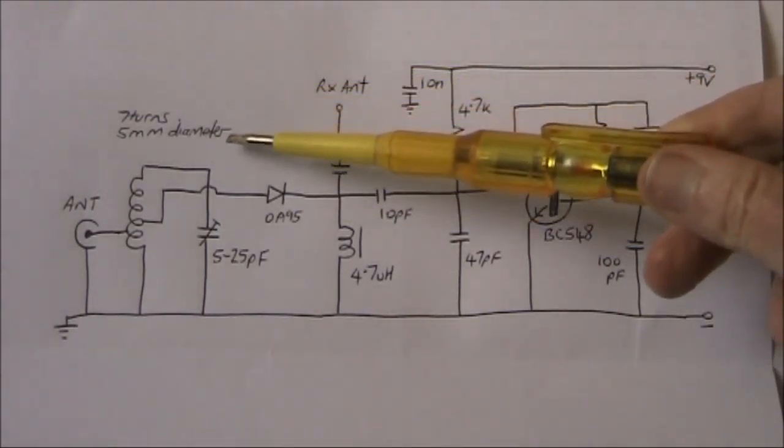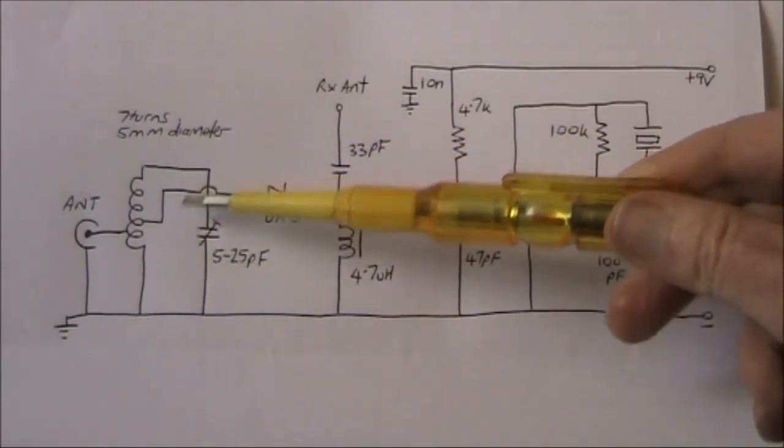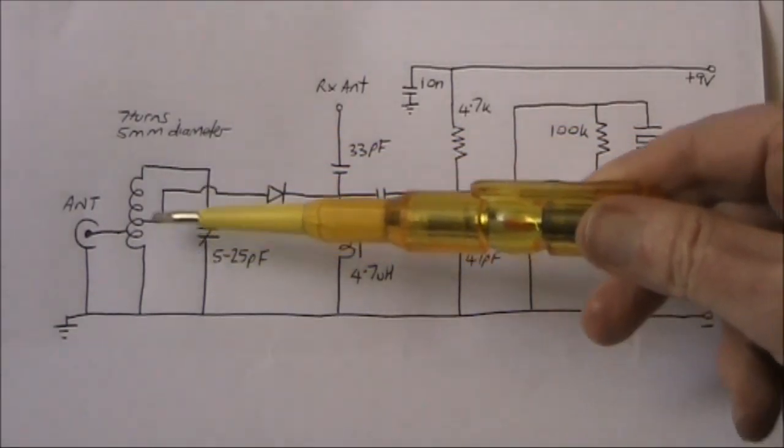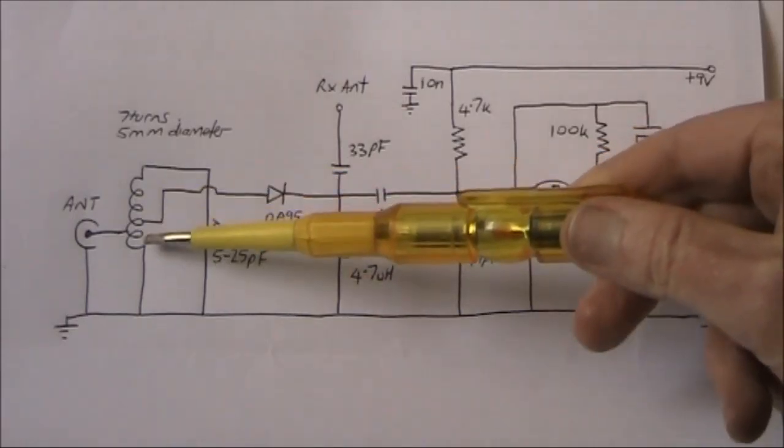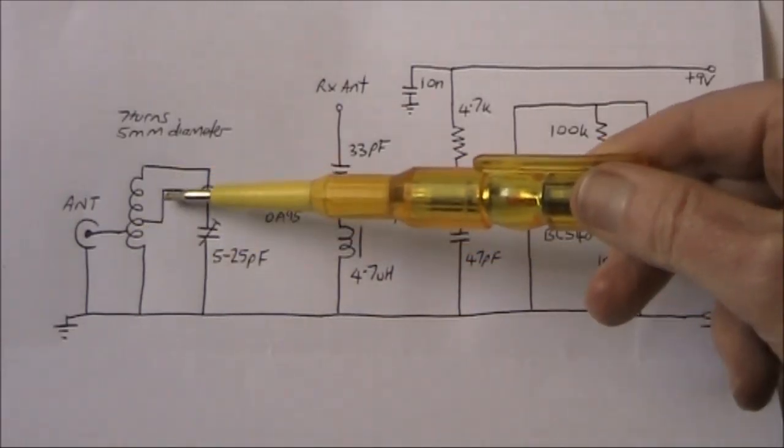There's 7 turns, 5mm diameter, so you can use a drill bit to wind your wire. It needs to be tinned copper wire, so you can experiment with the tapping positions.